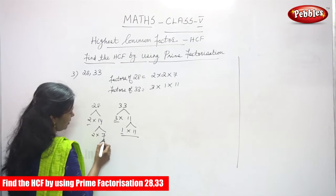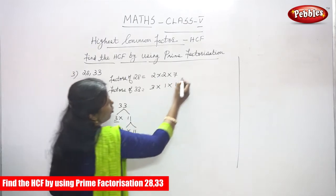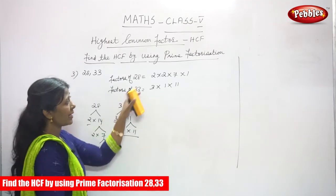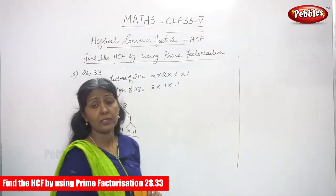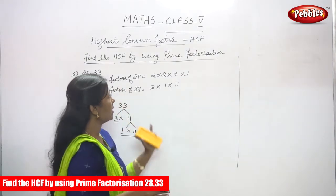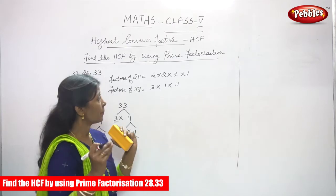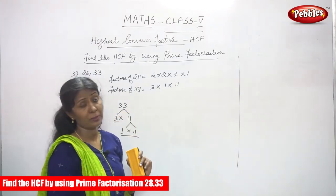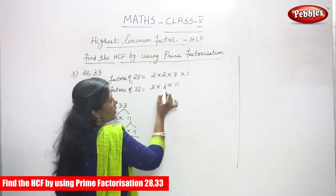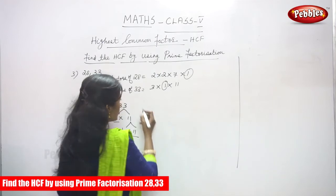If you want to take the factor of 7, you write 1 into 7. You have to write 1 also. So what is the common factor? There is no common factor, because a common factor is a factor present in both the given numbers. You can only take 1, since 1 is a common factor for all numbers.